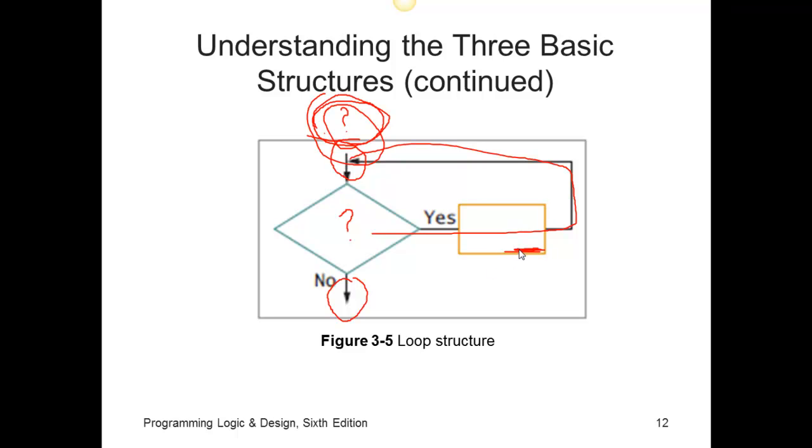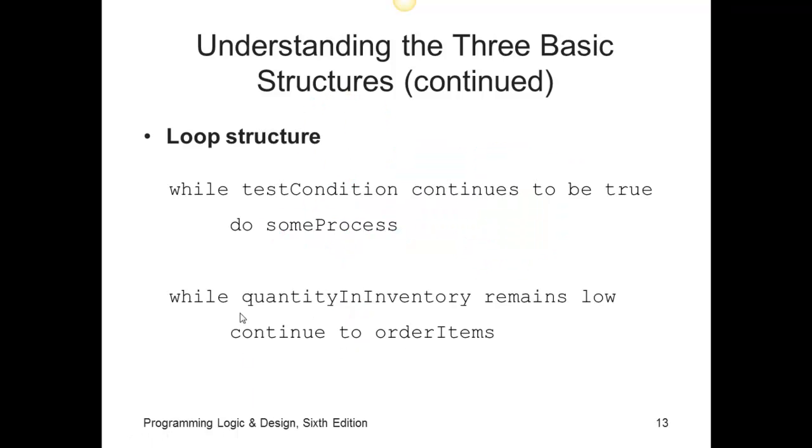So I'll apologize for the confusion that I may have caused here. But again, notice that there's one entry point, one exit point. Eventually, when you get to the point where the expression evaluates to false, you exit the structure. Here's some pseudocode of a loop structure. Again, just generically, while the test condition continues to be true, do something. And an example.